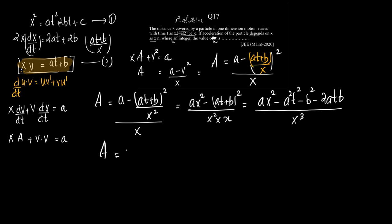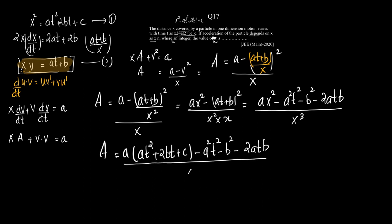Now, A = [a · x² − a²t² − b² − 2abt] / x³. Substituting x² from the original equation: x² = at² + 2bt + c. You can actually stop solving here because all numerator terms consist only of constants a, t, and b — meaning acceleration A is proportional to 1/x³, or A ∝ x⁻³. So the required value of n is −3.